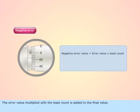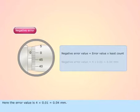The error value multiplied with the least count is added to the final value. Here the error value is 4 multiplied by 0.01 equals 0.04 mm.